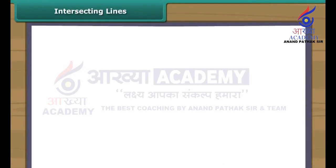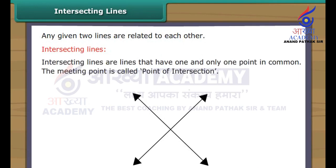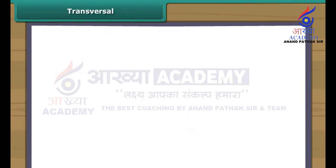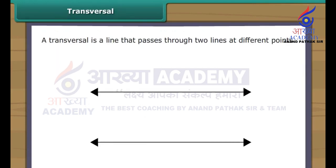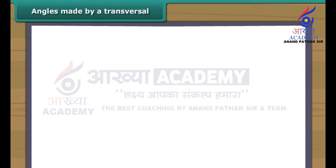Intersecting Lines: Two lines are related to each other in different ways. Let us look at each way separately. Intersecting lines are lines that have one and only one point in common. This meeting point is called the point of intersection. A transversal is a line that passes through two lines at different points. Mostly, a transversal produces several angles.